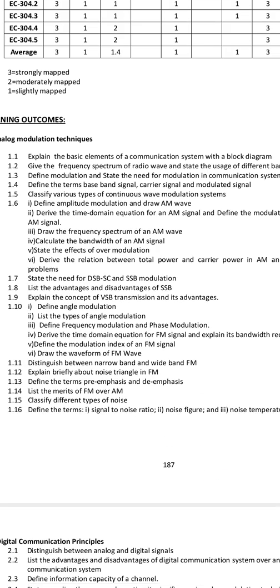Now in Chapter 1, first you have a question about basic elements of the communication system. We have a transmitter, modulator, and receiver with a channel — this is a basic block diagram. You have noise, channel, transmitter, receiver, and antenna. This is a basic block diagram — very important.